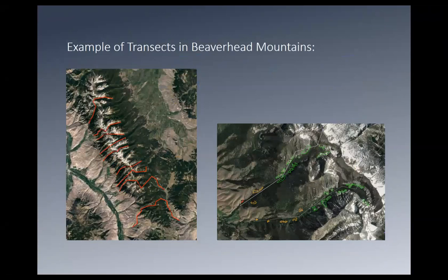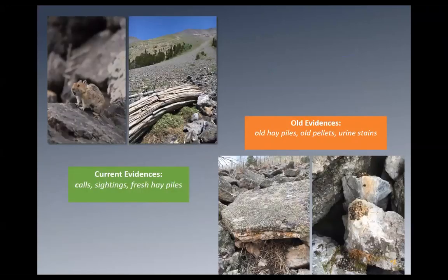This shows some of our results in the Beaverheads. Orange patches represent patches no longer occupied — pikas have likely shifted upslope. Red indicates a patch with no evidence whatsoever. Green is where pikas are currently occupying. Our evidence types include current evidence — seeing or hearing a pika, fresh hay piles where they store caches of food for wintertime — and old evidence: urine stains on rocks, old pellets, and old hay piles. Old hay piles disintegrate much faster than pellets and urine stains.